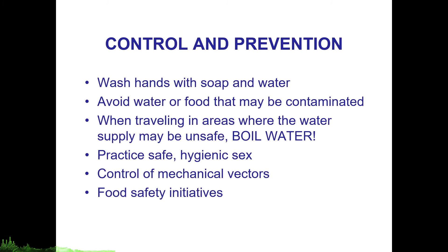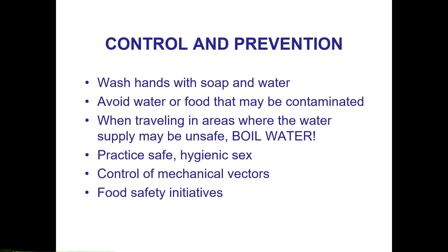Control and prevention of amoebiasis is quite simple: proper washing of hands with soap and water, avoiding contaminated food and water, boiling drinking water if quality is uncertain, and practicing safe and hygienic sex. Mechanical vectors can also be causes of outbreaks. In the public health setting, food safety initiatives are very important, including food handler education, proper screening, and routine inspection and grading of food establishments.